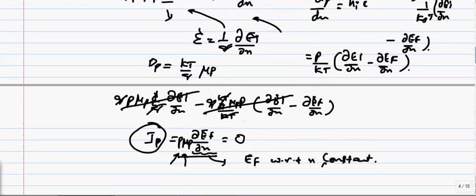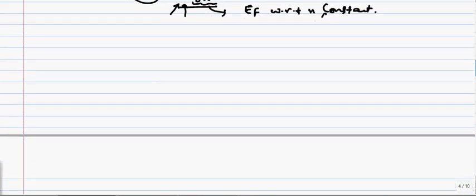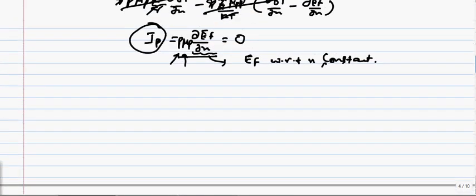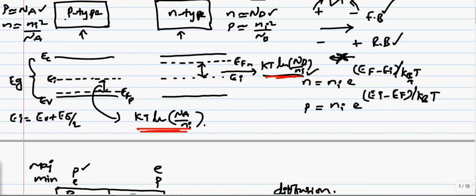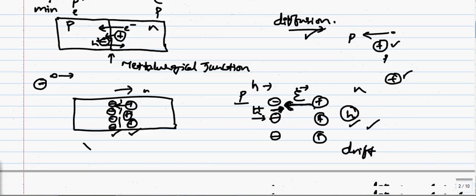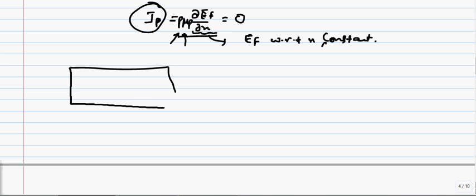So dEF by dX equals zero. Now if you look at this diode when we joined the two materials, we did not see how the energy band diagrams look when we actually combine P and N together. Now we have a P-N junction under equilibrium. The Fermi level is shown, and we know that the Fermi level should not be changing throughout the P-N junction diode when it is in thermal equilibrium. So let us take this as EF.